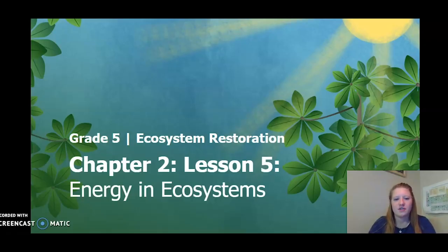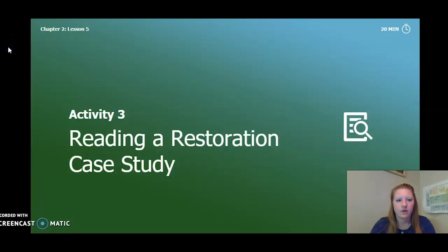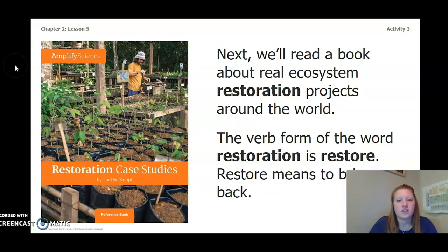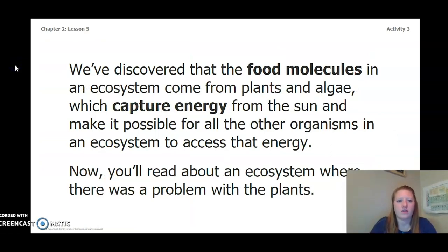Hello fifth graders, this is chapter 2, lesson 5 of the Ecosystem Restoration Unit. Remember we are skipping activity one, so let's continue our learning. We just answered some questions about how ecosystems get their energy. Now we'll read a book about a real ecosystem restoration project. The verb from the word restoration is restore, and restore means to bring back. We've discovered that the food molecules in an ecosystem come from plants and algae, which capture energy from the sun and make it possible for all the other organisms in an ecosystem to access that energy. Now you'll read about an ecosystem where there is a problem with the plants.